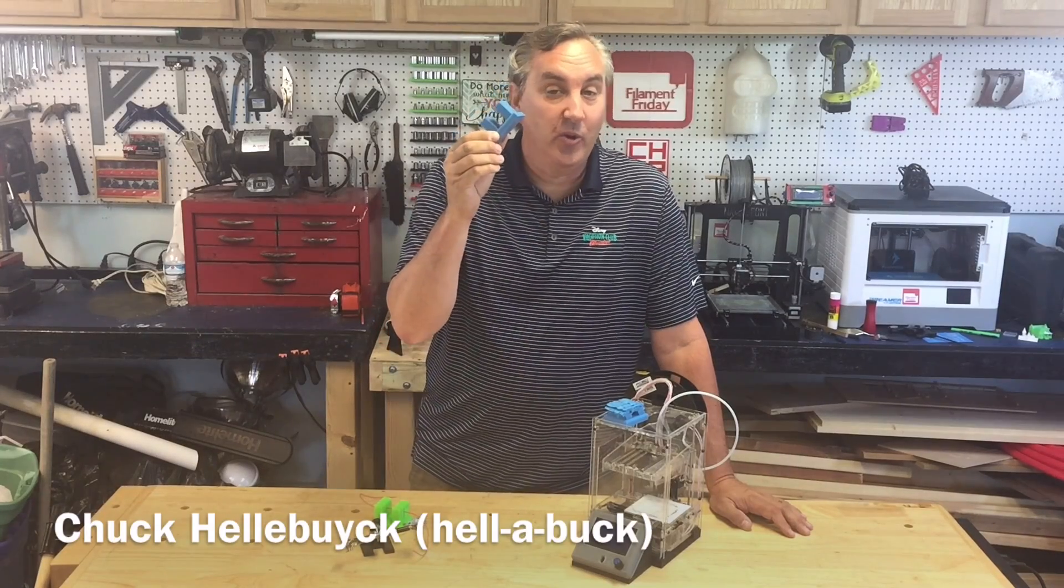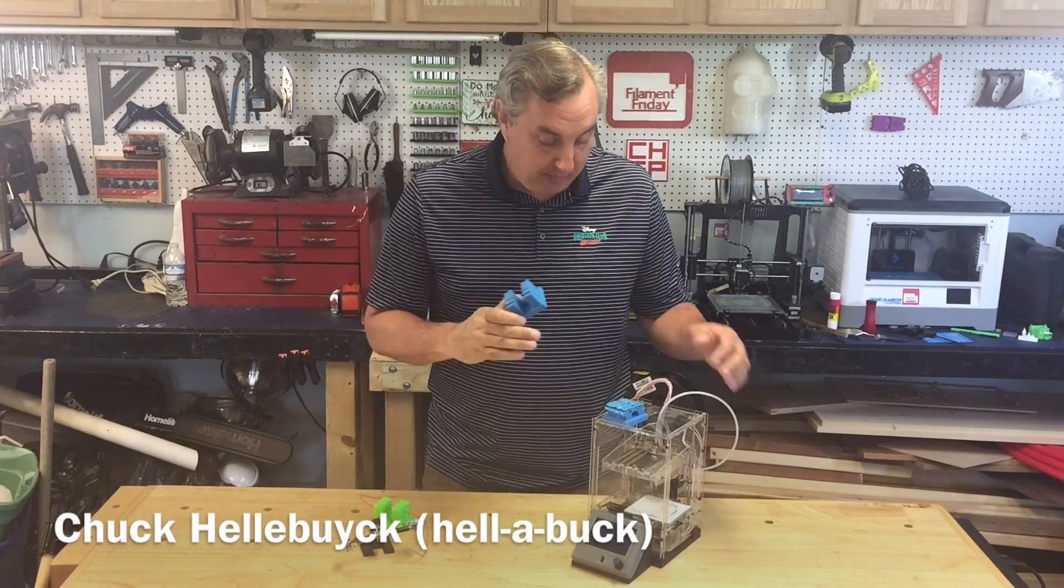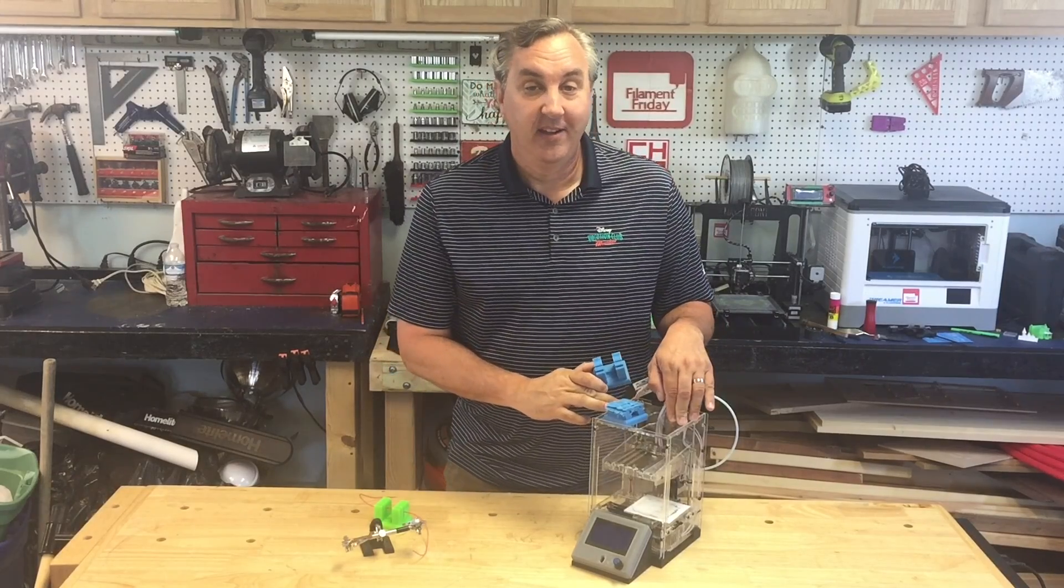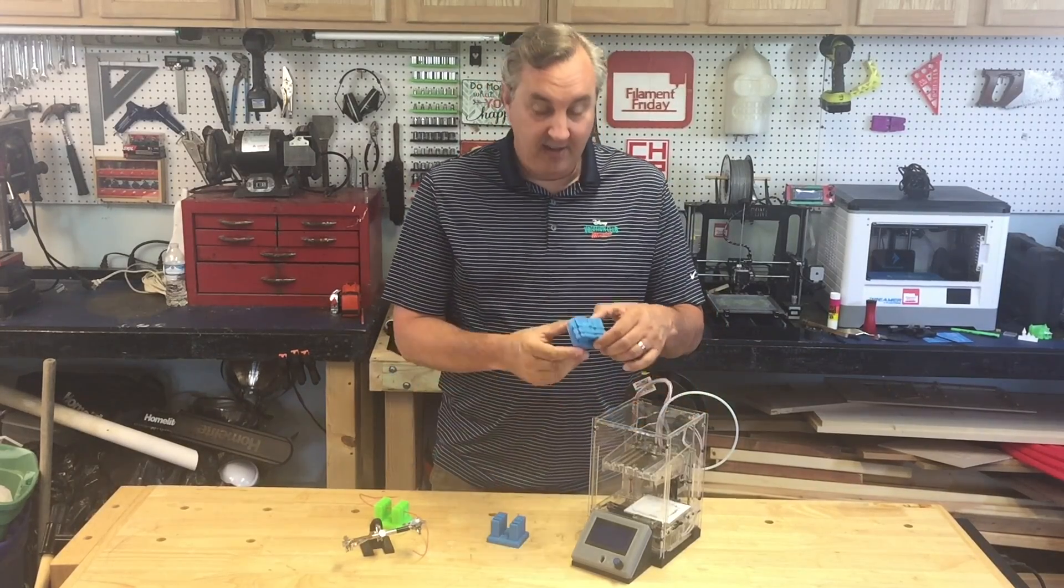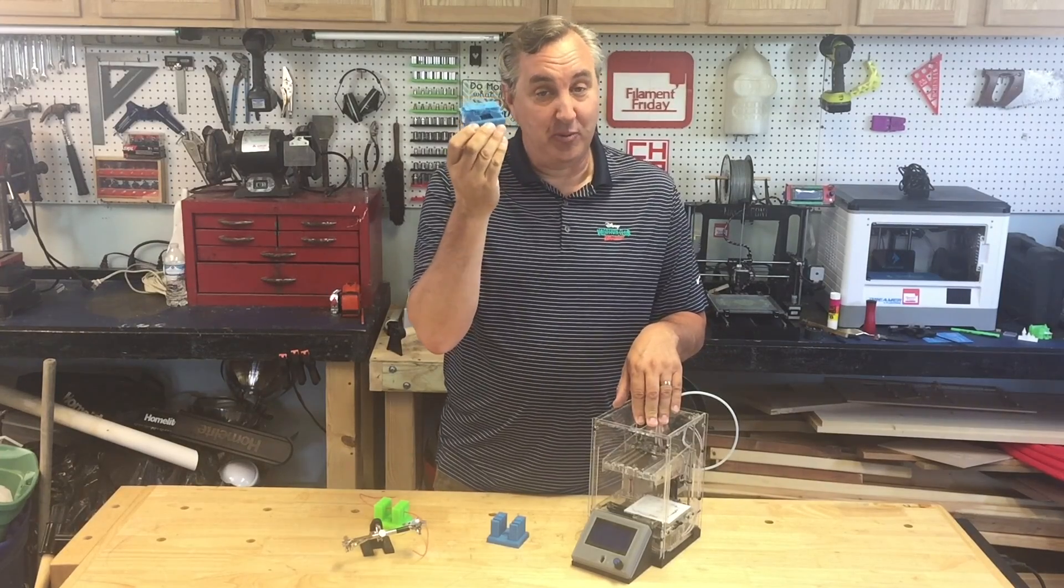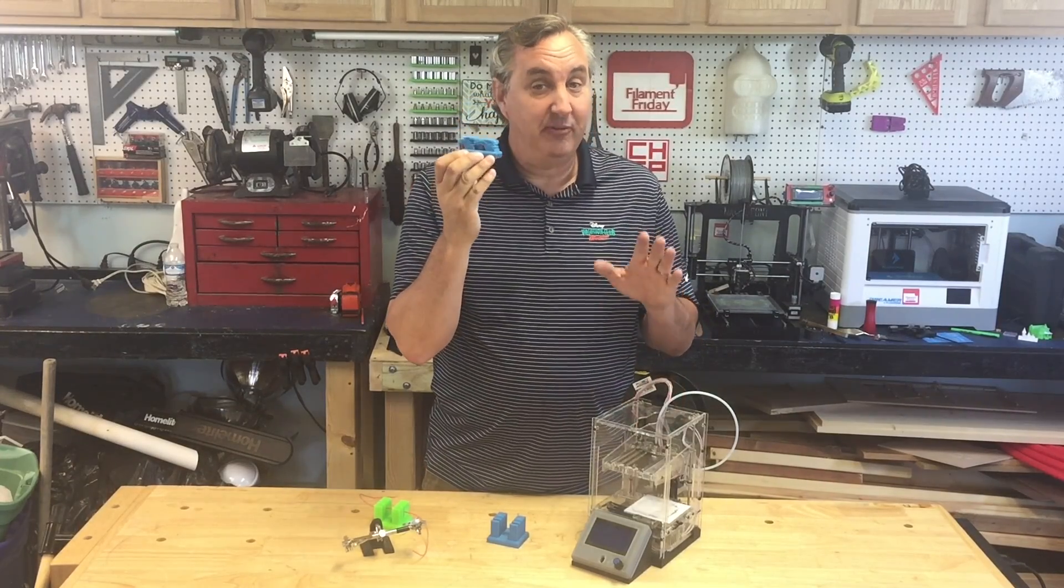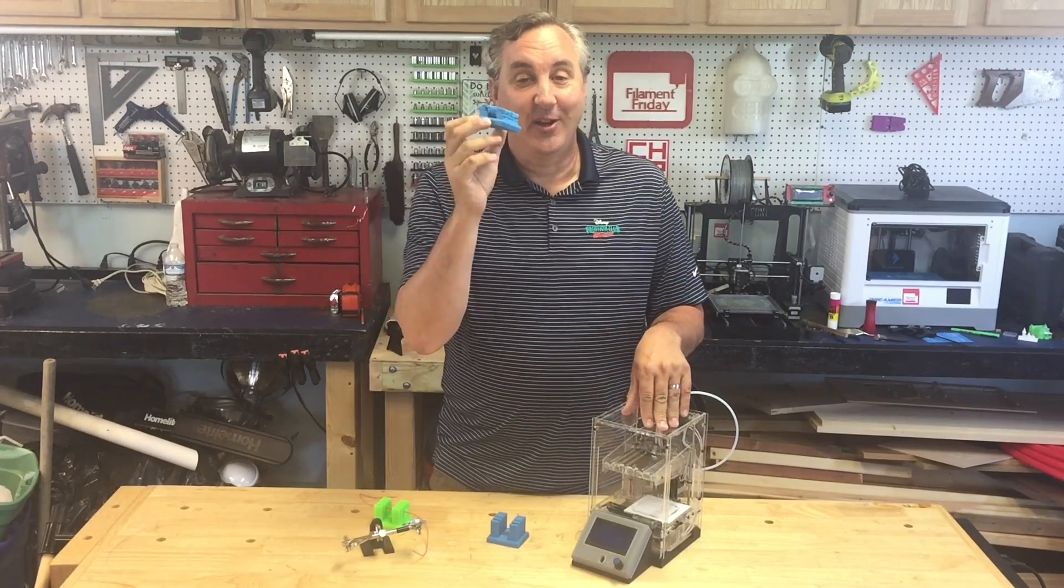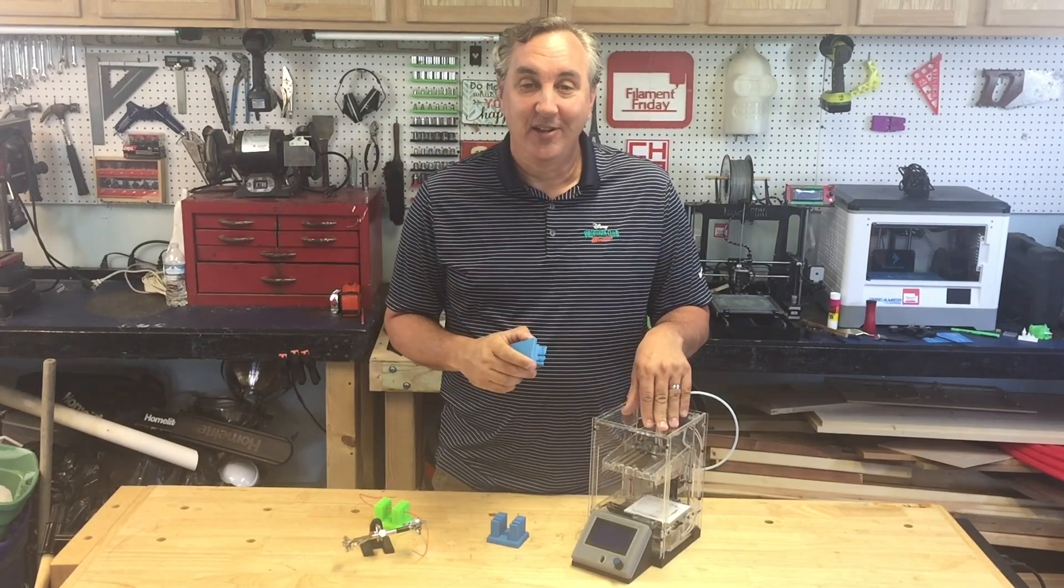I wanted to print this wire holder that I found on Thingiverse and print it on a Fabricator Mini, my original Fabricator Mini. But unfortunately it really let me down. I got some major shifting and failure on this print and I've never seen this before on my Fabricator Mini. Well I figured out how to fix it and I'll show you how on today's Filament Friday.